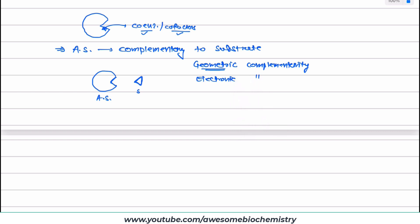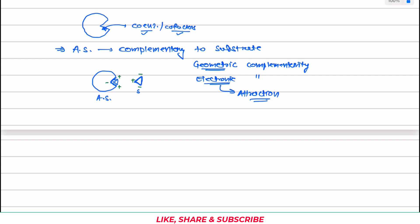Suppose this substrate has a positive charge over here and negative charges at these two places, then its corresponding active site will have a negative charge over here and a positive charge over here. So the substrate can properly fit into the active site and that attraction force will be there. Electronic complementarity makes sure that attraction between substrate and enzyme is maintained. So remember, there is geometric — shape-related — as well as electronic complementarity.